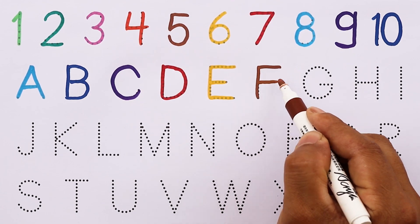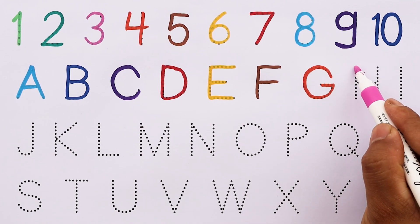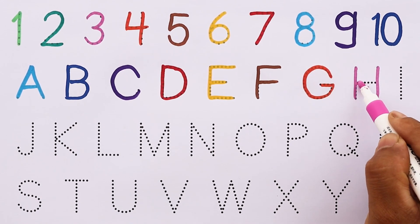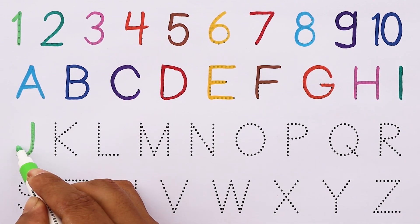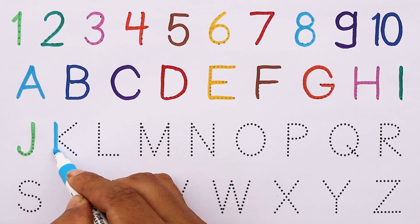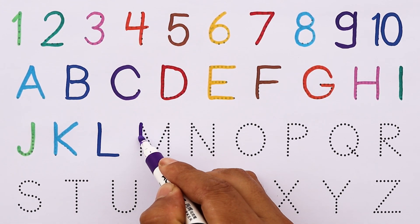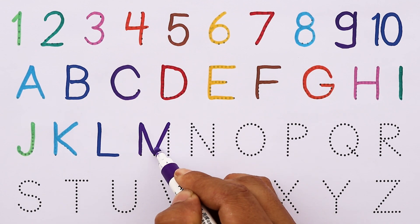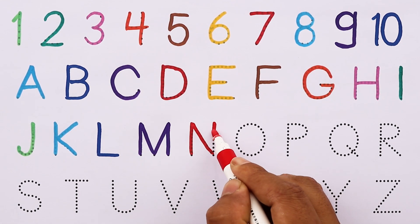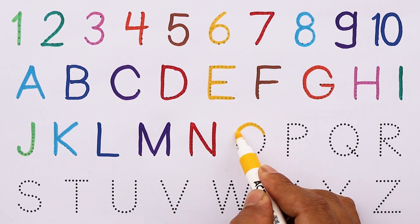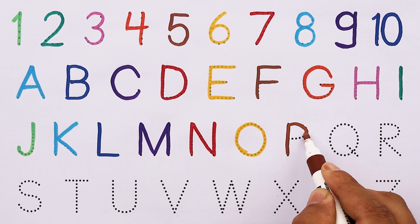Next time won't you sing with me? G, H, I, J, H, I, J, K, L, U, R, S, T, U, V, W, X, Y, and Z. Now I know my ABCs. Next time won't you sing with me?